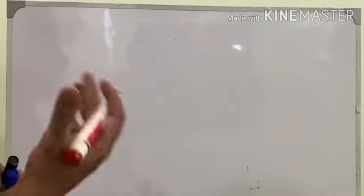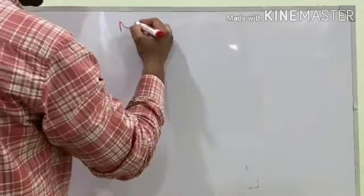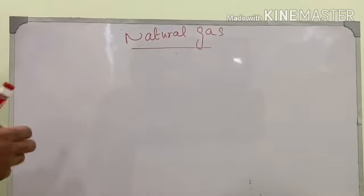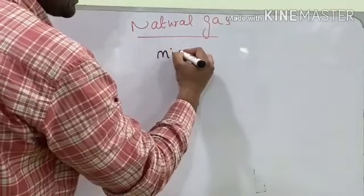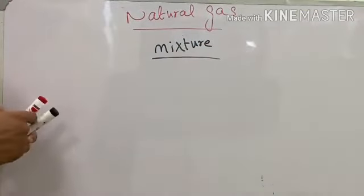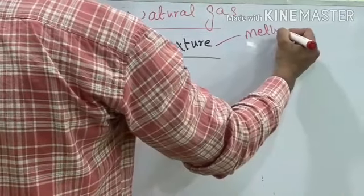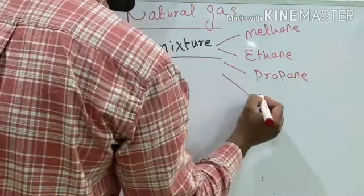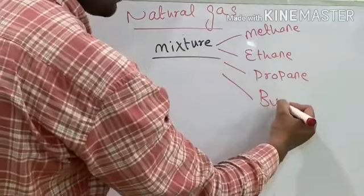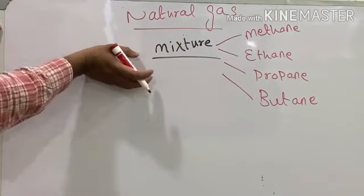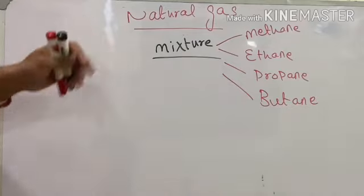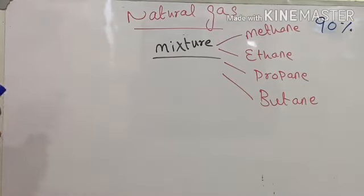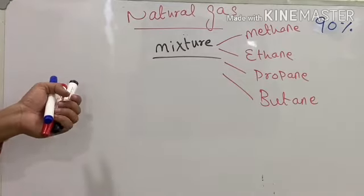Now we are moving towards our next topic for today: natural gas. What is natural gas? Natural gas is a mixture of methane, ethane, propane, and butane. Methane contains about 90 percent of the natural gas, which gives it an odor that helps identify whether there is any leakage.